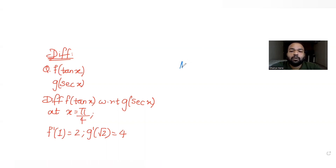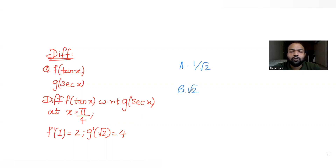Let's note the options down. The first option is 1/√2, the second option is √2, the third option is 1, and the fourth option says none of these.